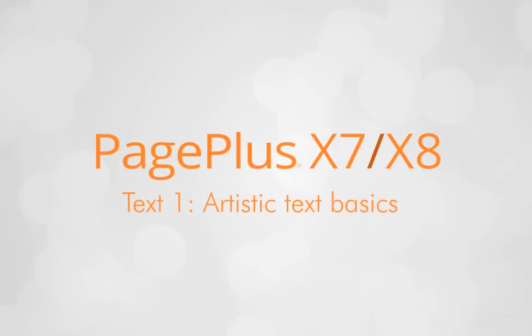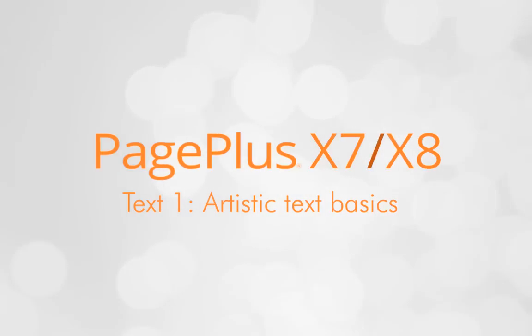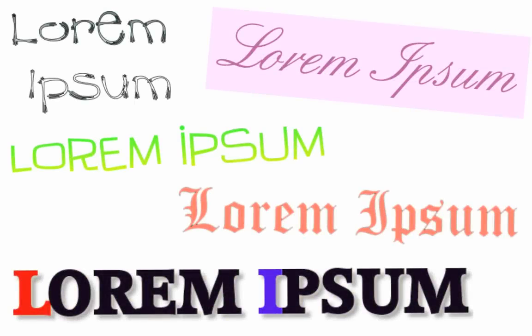A great way of making the title of your publication stand out is to use Artistic Text. Artistic Text is standalone text which you type directly onto the page. It's really easy to format and is especially useful for titles, headlines and pull quotes.